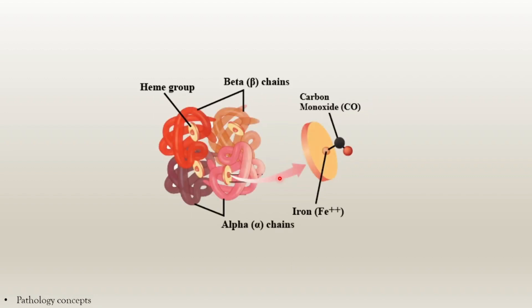The next is carboxyhemoglobin. When carbon monoxide is combined with hemoglobin, it is called carboxyhemoglobin. Carbon monoxide is generated by incomplete combustion of hydrocarbons. When carbon monoxide poisoning occurs, it has a greater affinity to bind with hemoglobin than oxygen, thus forming carboxyhemoglobin and reducing O2 carrying capacity and O2 utilization, leading to hypoxia. Acute toxicity of carbon monoxide poisoning can be lethal.